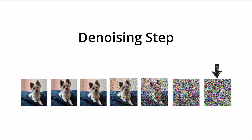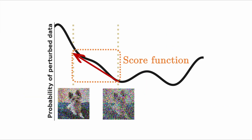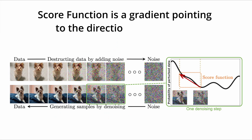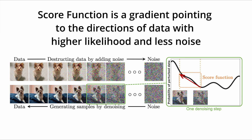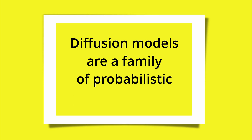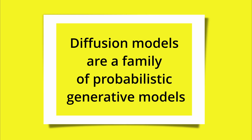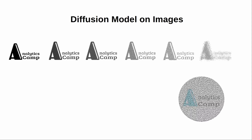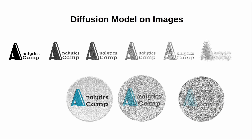In the denoising step, some models estimate a score function, which is a gradient pointing to the directions of data with higher likelihood and less noise. Diffusion models are a family of probabilistic generative models that progressively destruct data by injecting Gaussian noise and then learn to reverse this process for sample generation.